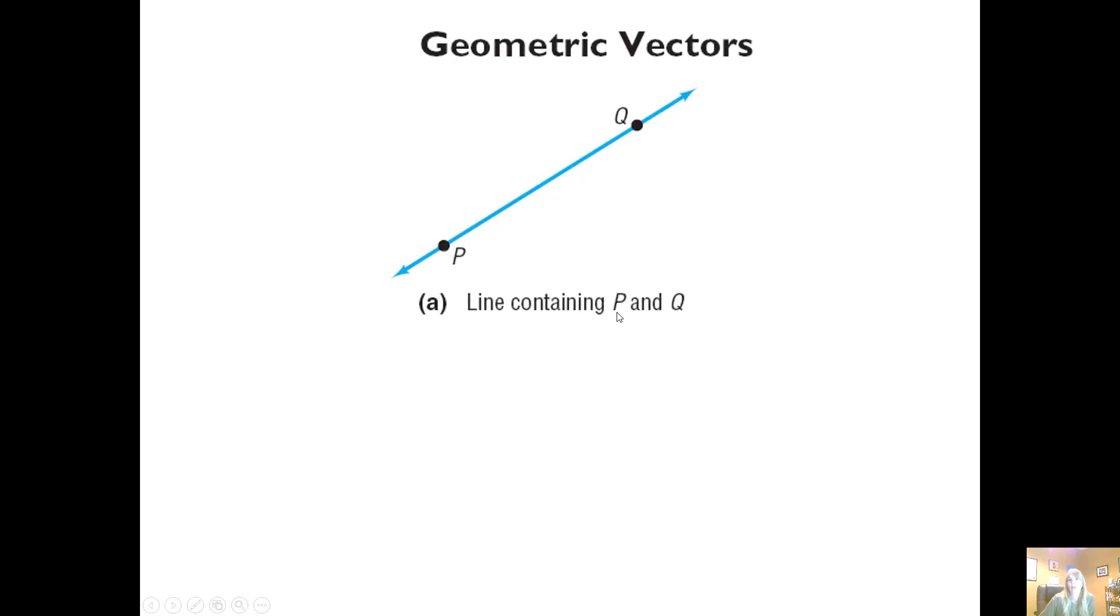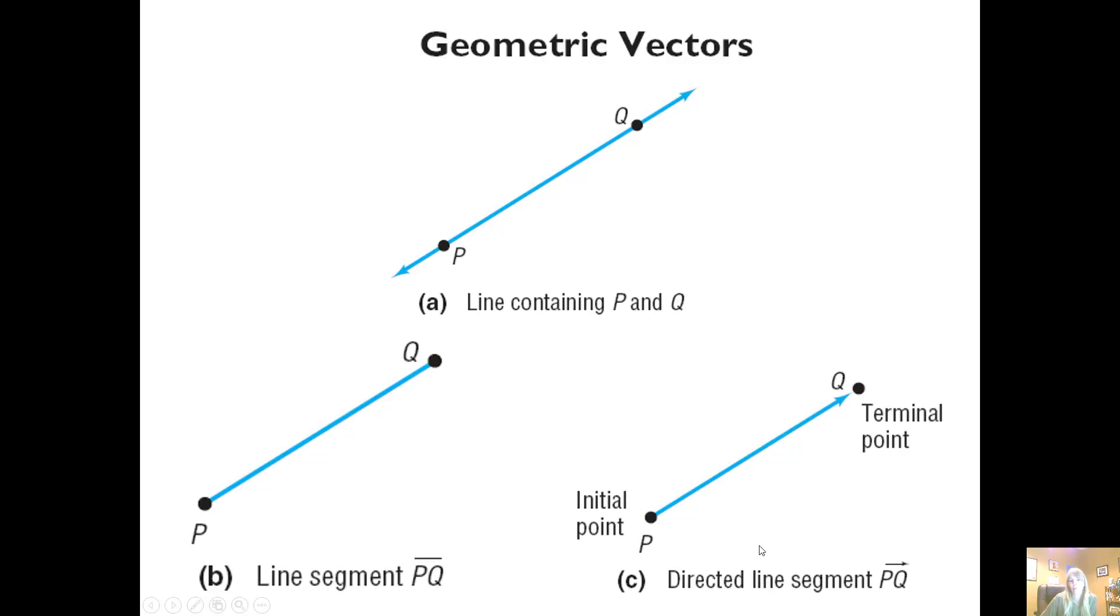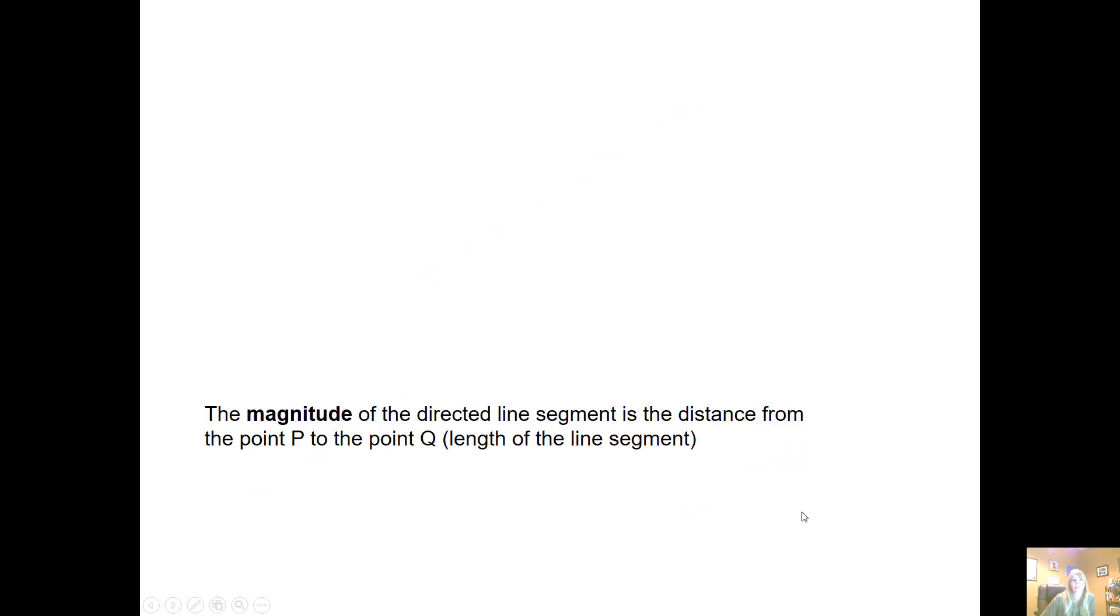Geometrically, if we look at a line that contains two points, and then cut off and just look at the actual line segment, this gives me the line segment PQ. With my directed line segment, I have an initial point and a terminal point, which gives my vector. The length of the line is the magnitude, so the magnitude of the directed line segment is the distance from point P to point Q.